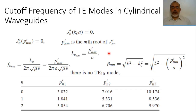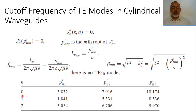We have seen in the previous video that the cutoff frequency for the TE nm mode can be determined as b'_nm over 2π a times square root of mu epsilon, where b'_nm is the mth root of the first derivative of the Bessel function of order n. The different values for b'_nm for different values of n and m are obtained from a table, and the lowest value b'_11 is the smallest value in this table.